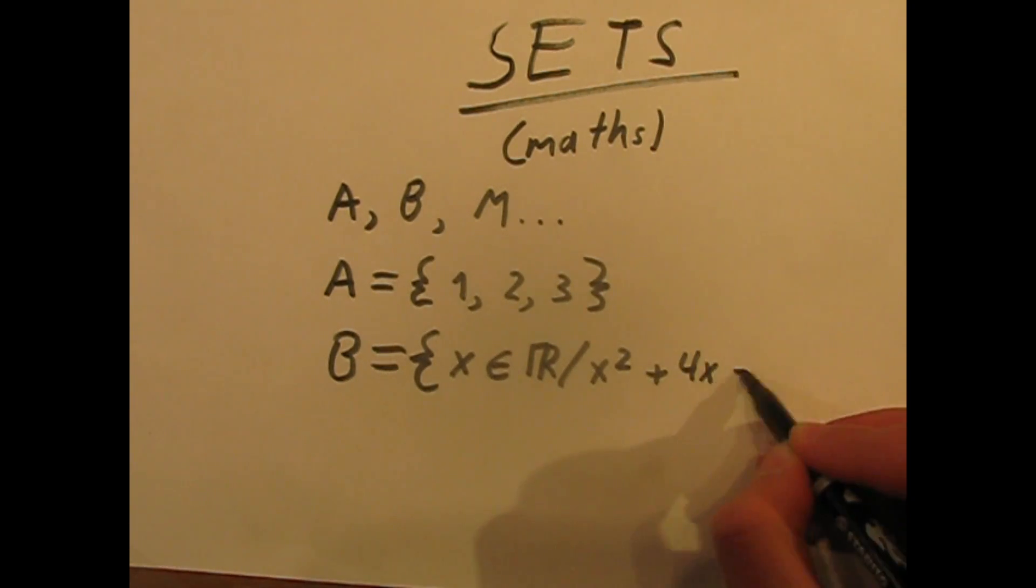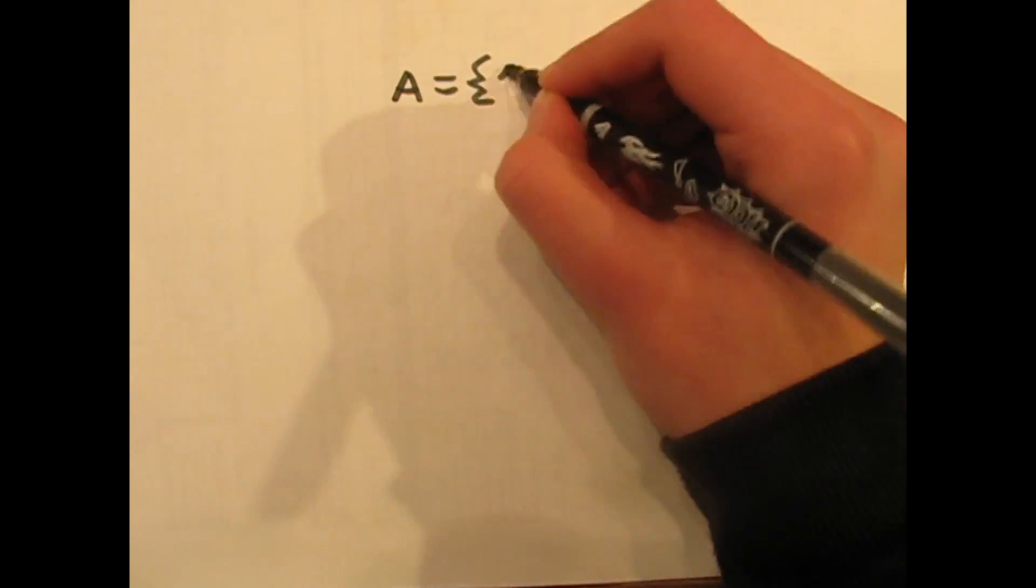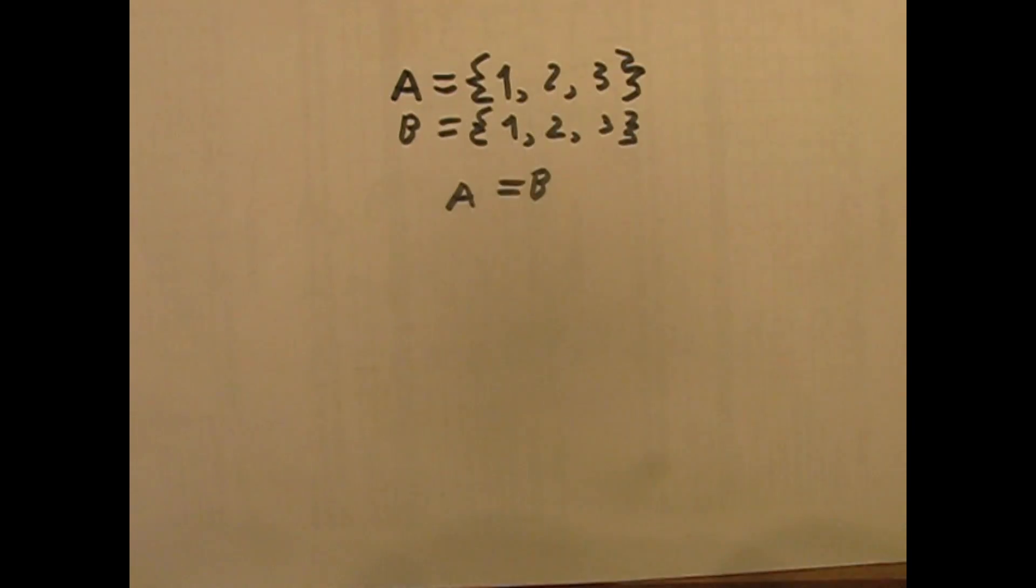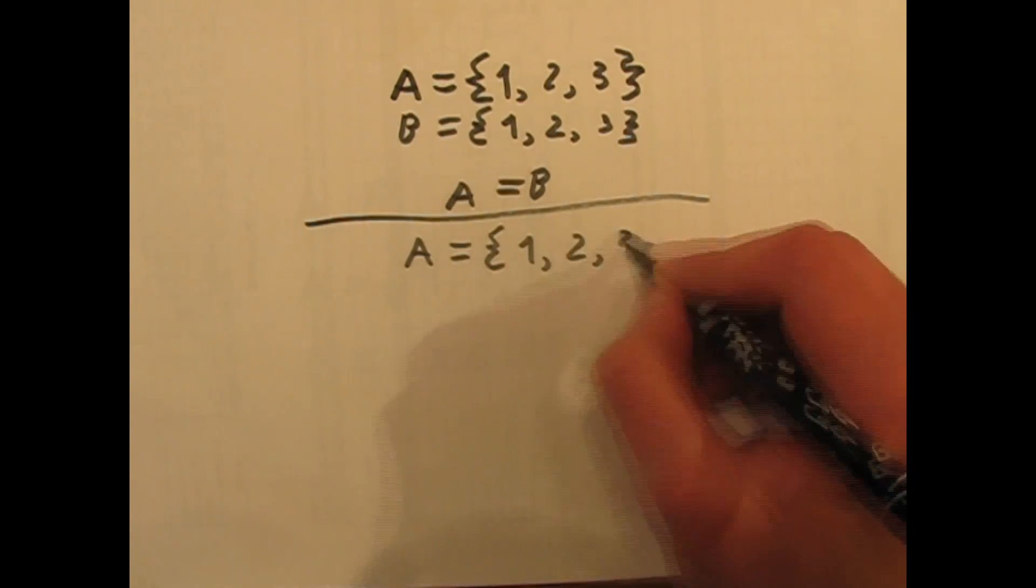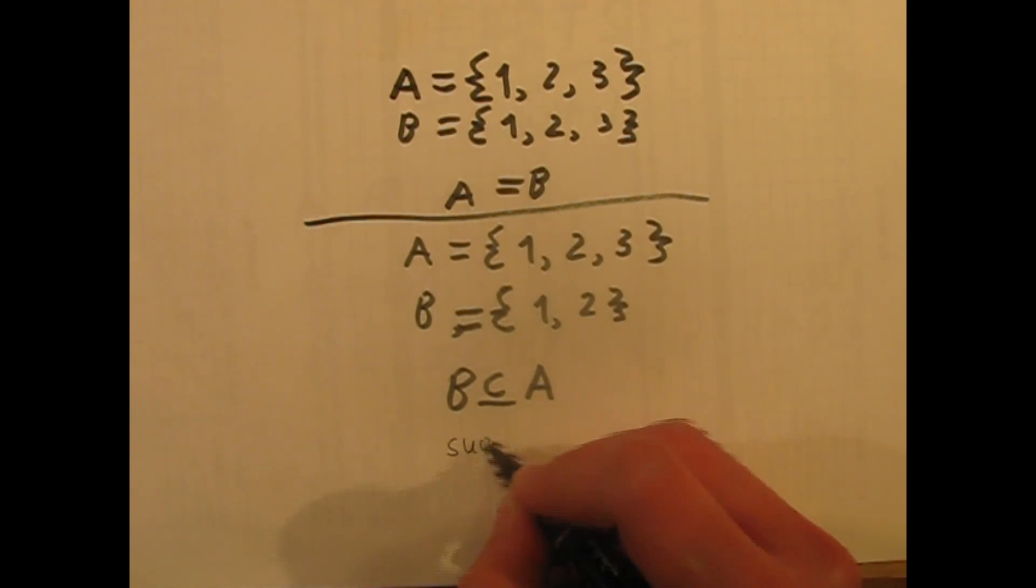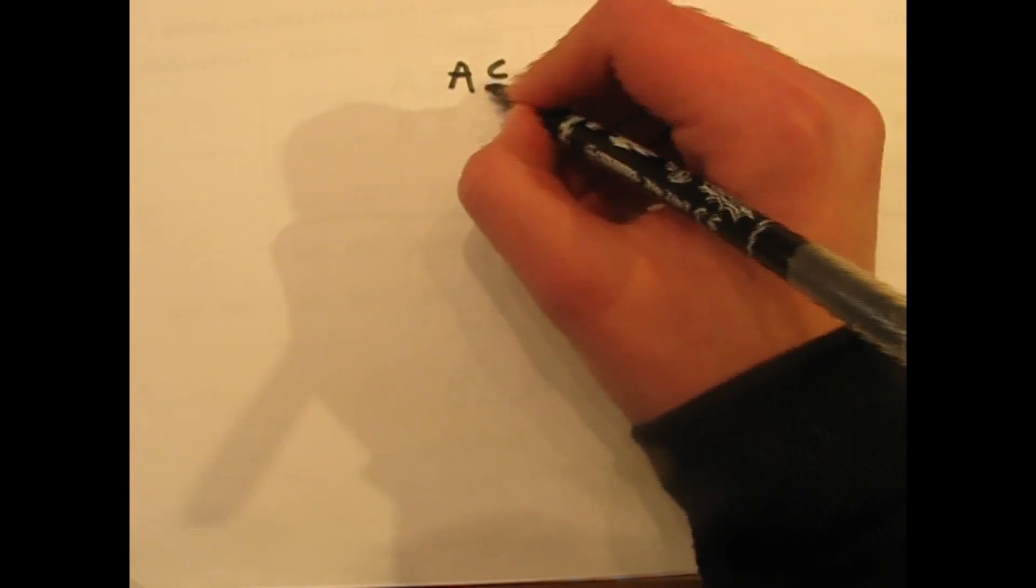For example, we can set an equation which they fulfill. Two sets are equal when they have exactly the same components. Also, a set A is a subset of another set B if every single component of A is also a component of B. We can also say that any set is a subset of itself.